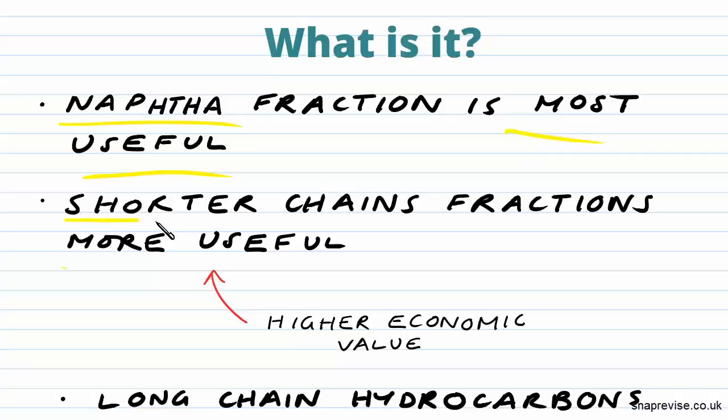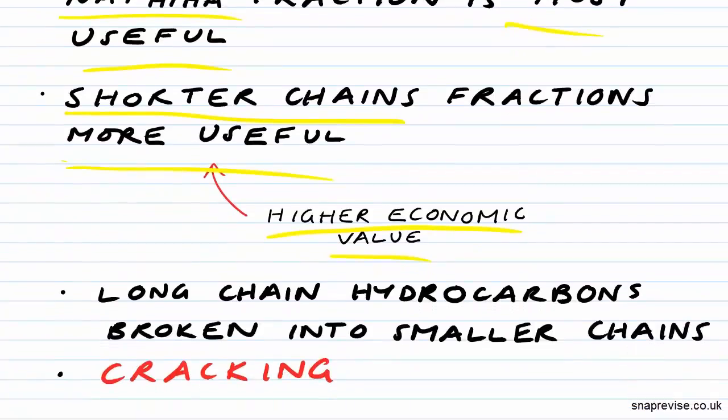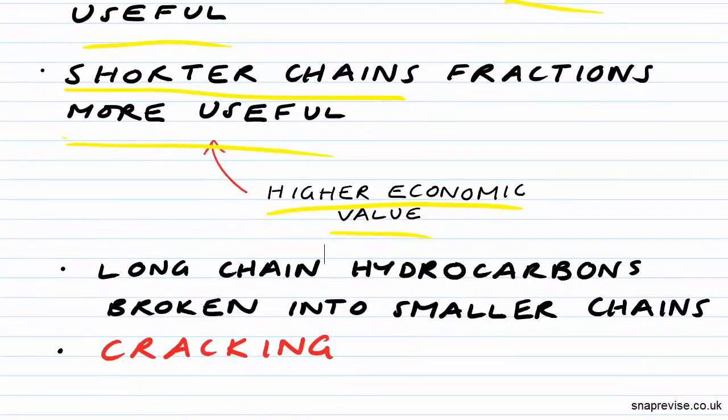Now in general the shorter chain fractions are more useful and the shortest chains, those with a carbon chain length of less than 5, are actually gases. As our shorter chain fractions are more useful they're more in demand and therefore have a higher economic value. Our longer chain hydrocarbons which aren't as in demand therefore have a lesser economic value.